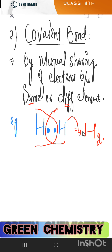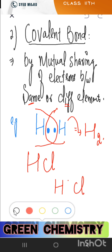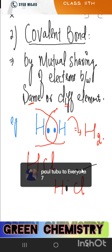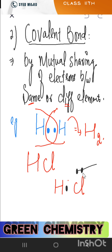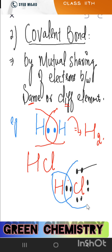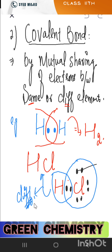Similarly, in the case of HCl molecule: drawing it with Lewis dots, H has one electron and Cl has seven electrons in its last shell — arranged as 2, 2, 2, 1. One electron from hydrogen and one from chlorine participate in mutual sharing. This completes hydrogen's duplet and chlorine's octet. Here the elements are different — hydrogen is one, chlorine is another — so this is a covalent bond between different elements.